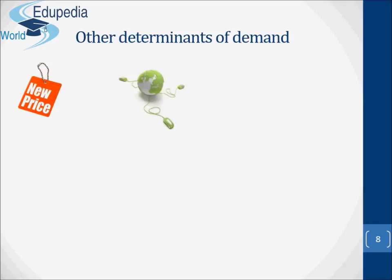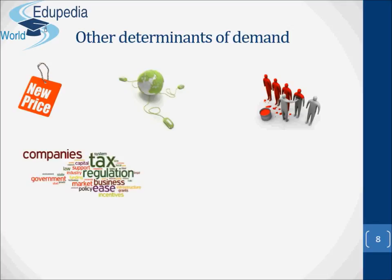Change in technology: technological advances can fundamentally alter the costs of production. Consider, for example, how the microchip revolution has changed production methods and information handling in virtually every industry in the world. Organizational changes: various cost savings can be made in many firms by reorganizing production. Government policy: costs will be lowered by government subsidies and raised by various taxes.